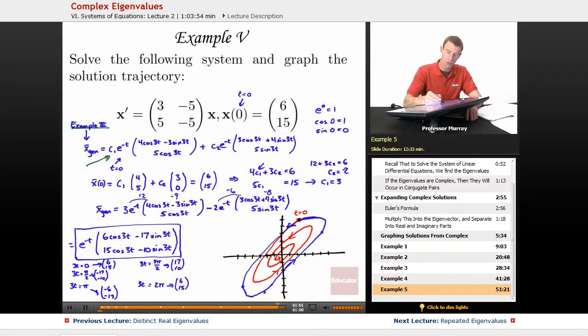Then we plugged in t equals zero because that was the initial condition we were given, which meant the e to the negative t's, those all turned into one. The cosine of 3t's, those all turned into one. And so those are where I got the 4 and 5 here, and that's where I got the 3 here. And then all the sine terms, sine of zero is zero, so those all kind of dropped away when we plugged in t equals zero.